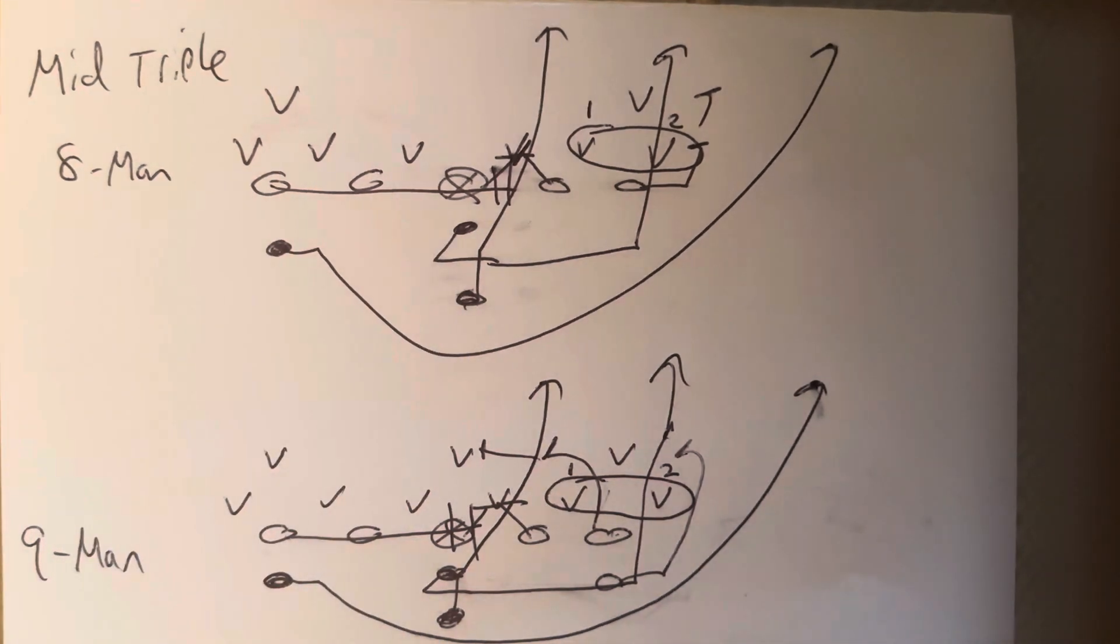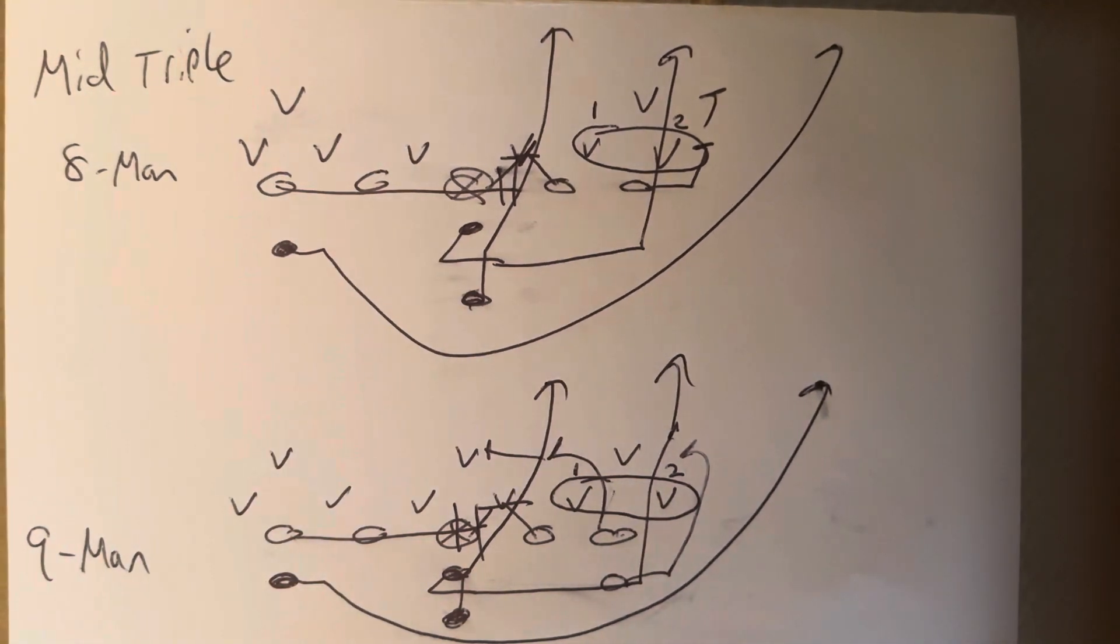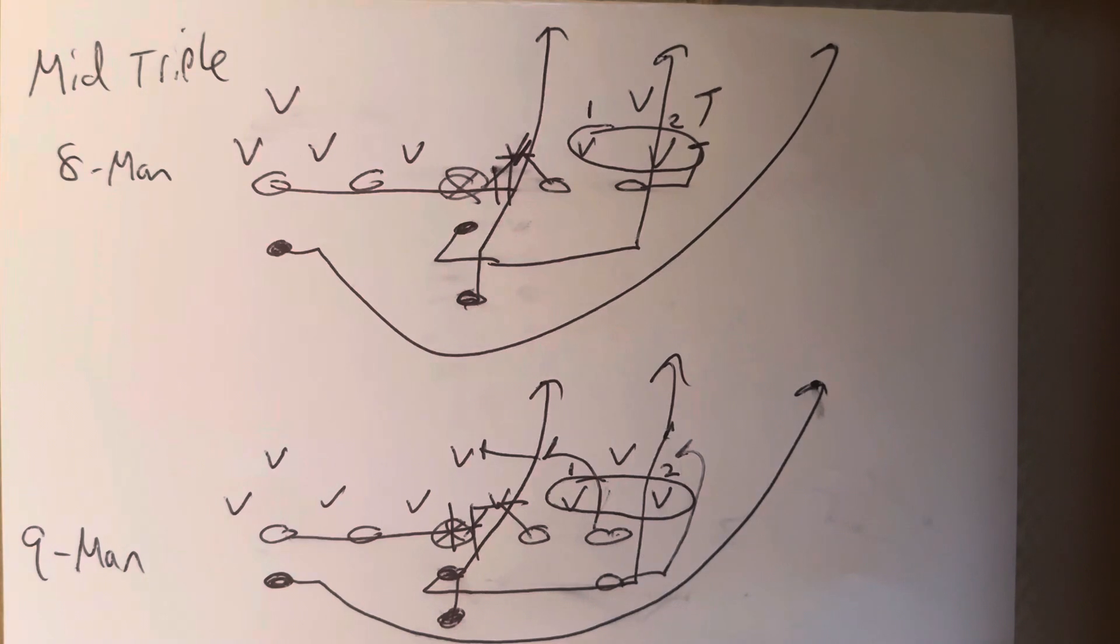Then you've got your triple action from there. Quarterback is going to take the snap, jump back, point the ball. The B-back is going to sprint through the ball, sprint through the playside hip of the guard, and sprint through the end zone.